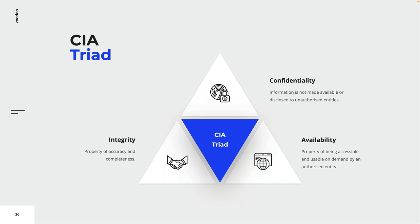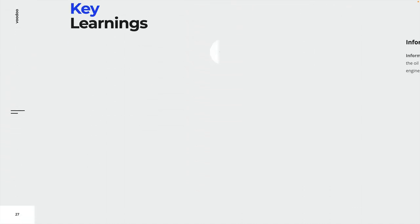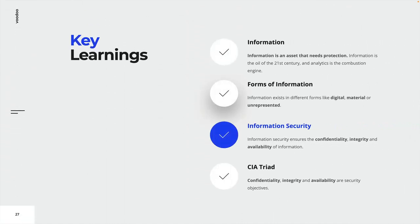We just covered all three of the security objectives, and this takes us to the end of this lecture. Congratulations, you just finished the first lecture of this course. Let's review the key learnings: information is an asset that needs protection; information exists in different forms — digital, material, or unrepresented; information security ensures the confidentiality, integrity, and availability of information; and confidentiality, integrity, and availability are often referred to as the CIA triad — the core objectives of information security.